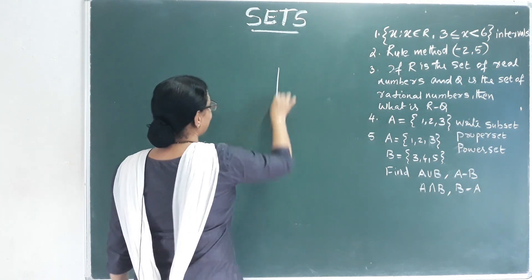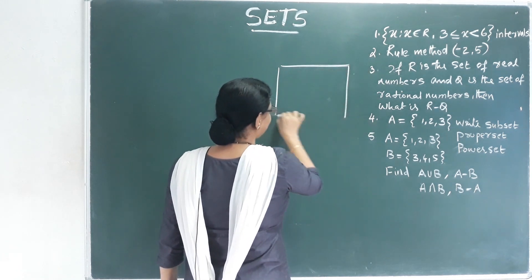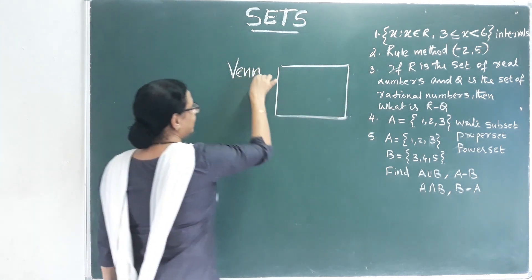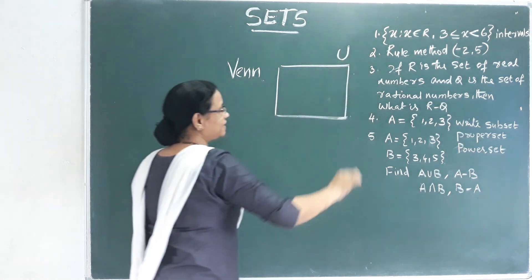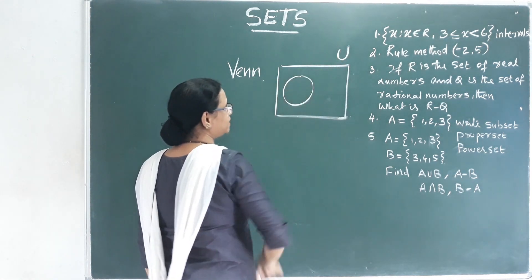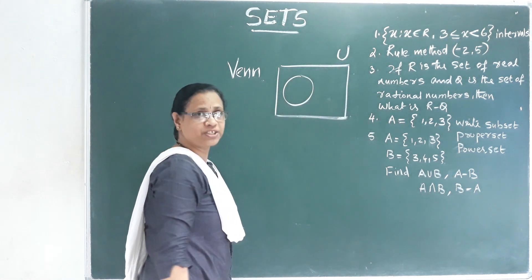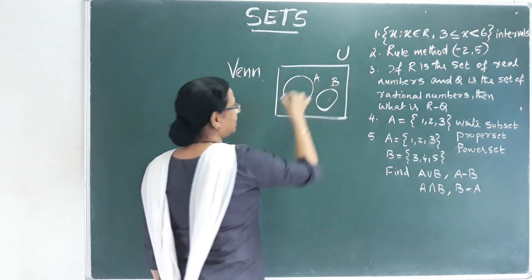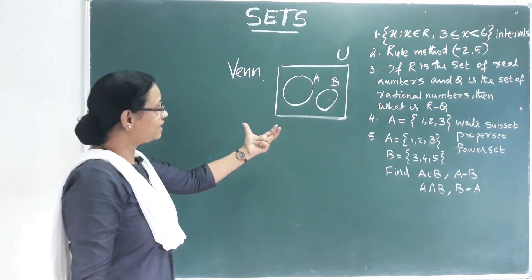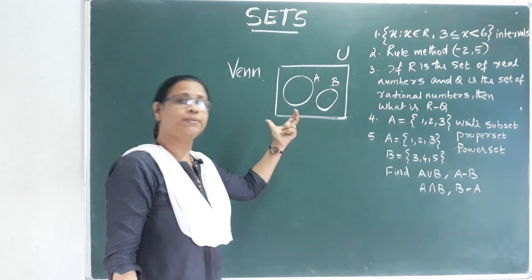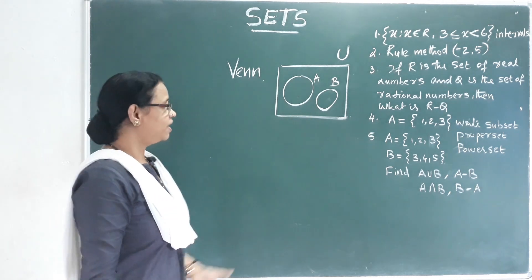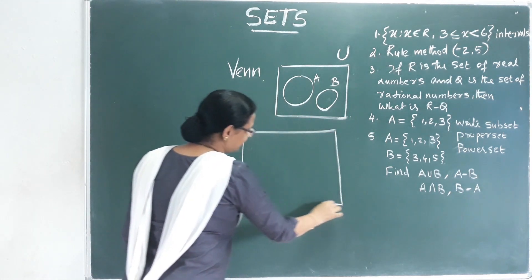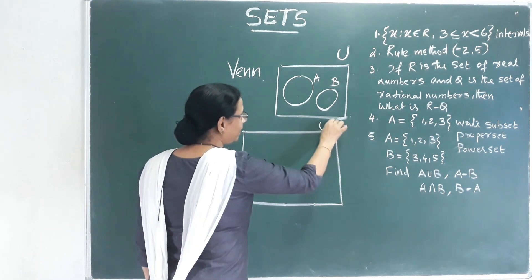The Venn diagram easily represents each set. Here is a Venn diagram. This is the universal set. In this, I represent set A. If you represent set B, you represent a set. This is a universal set.